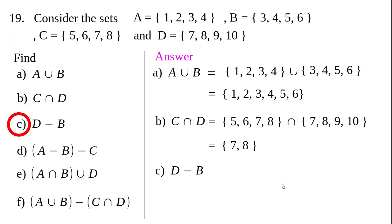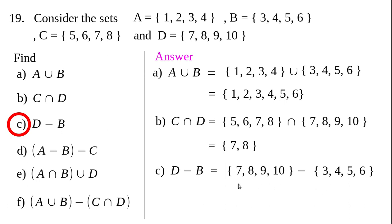Question (c): D minus B. Write set D first, then minus B. The meaning of D minus B is the set of all elements which are in D but not in B. Seven is in D but not in B; 8, 9, 10 are in D but not in B. Therefore {6, 7, 8, 9, 10} minus {3, 4, 5, 6} equals {7, 8, 9, 10}.